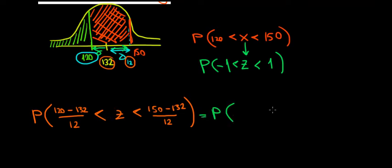The probability that z is between 120 minus 132, that's minus 12, divided by 12 is minus 1, and 150 minus 132, that's equal to 22 divided by 12, that's 1.5.